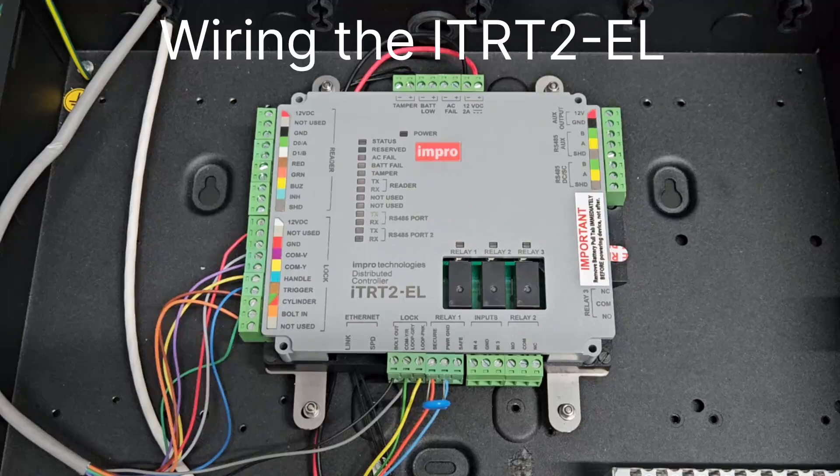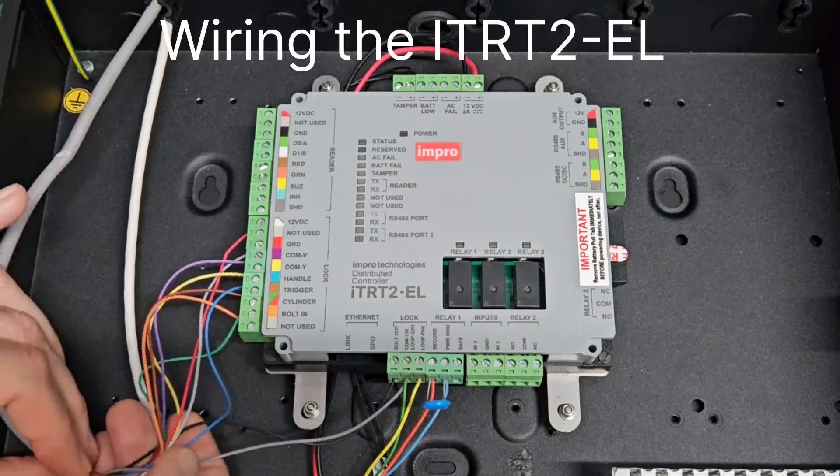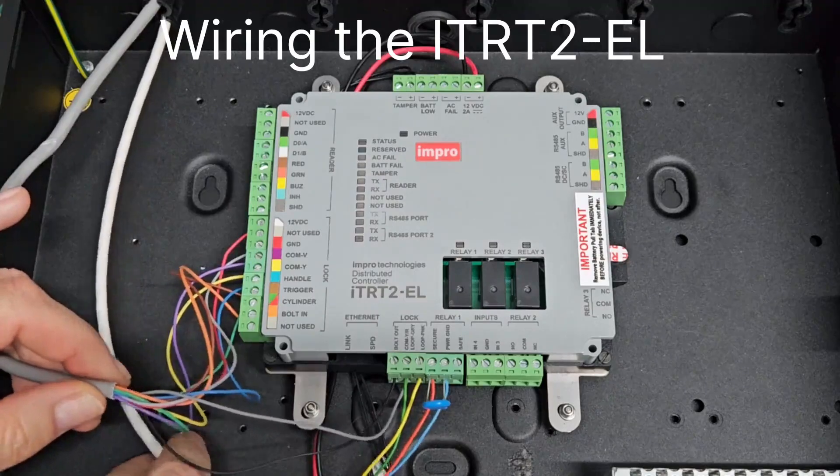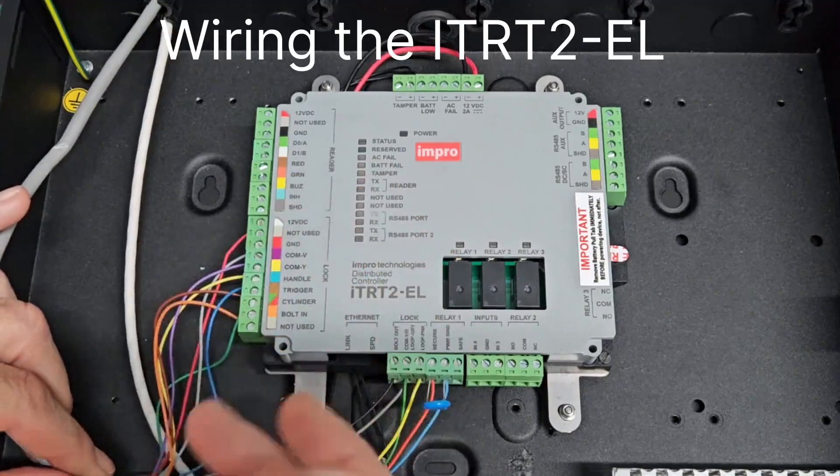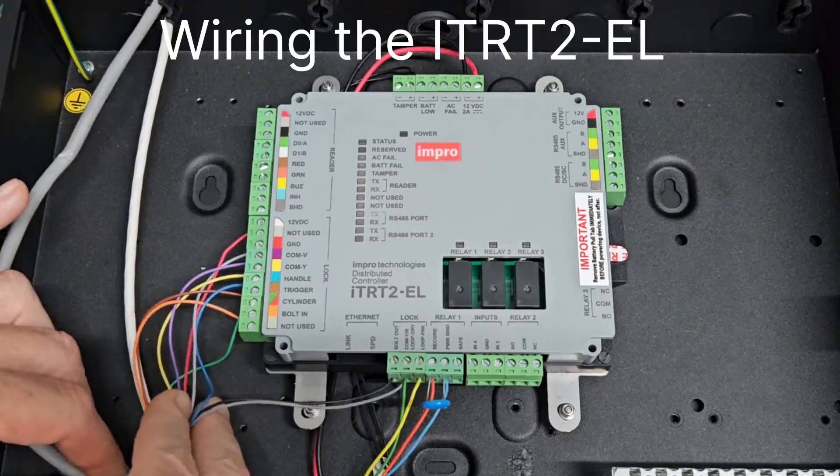Moving across to the distributed controller end of things. Begin by stripping back both of the data cables, so you expose 12 to 15 centimeters of the colored conductors.